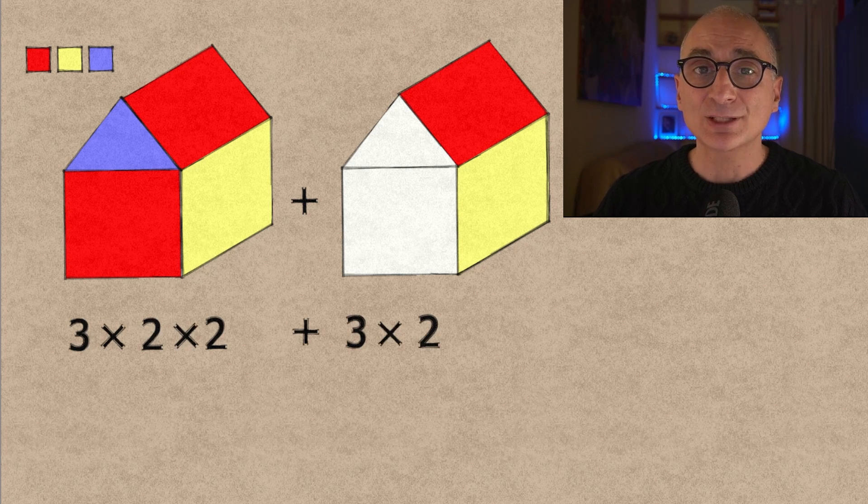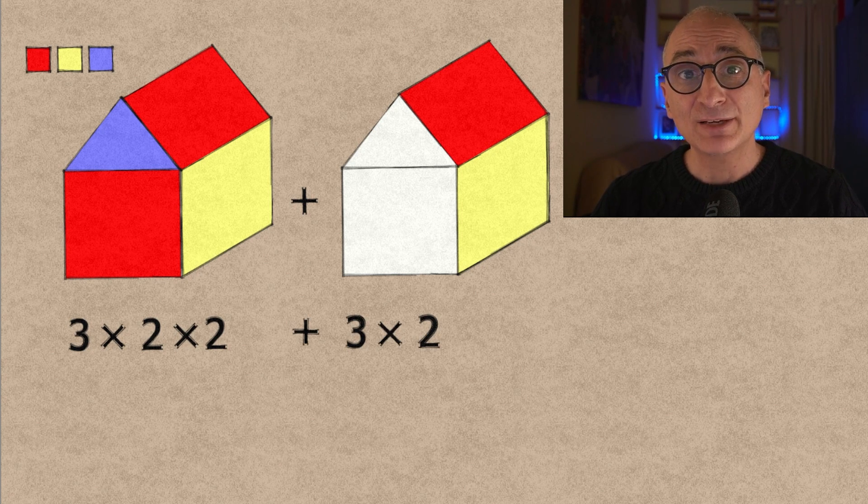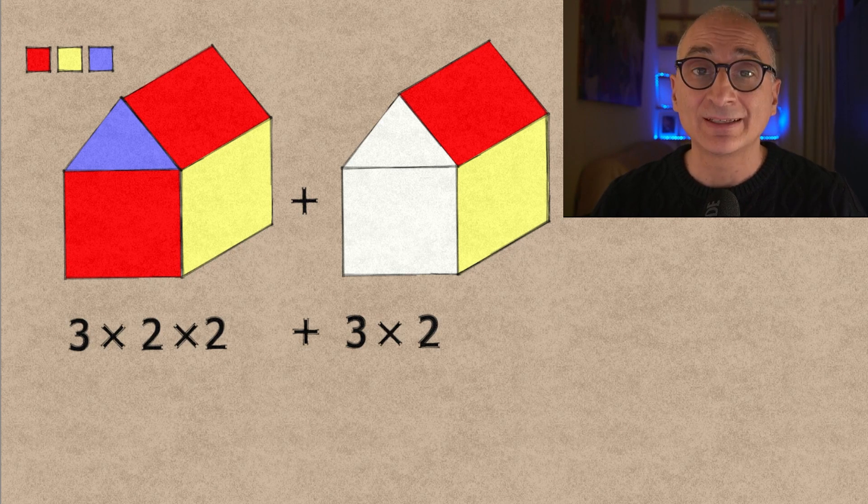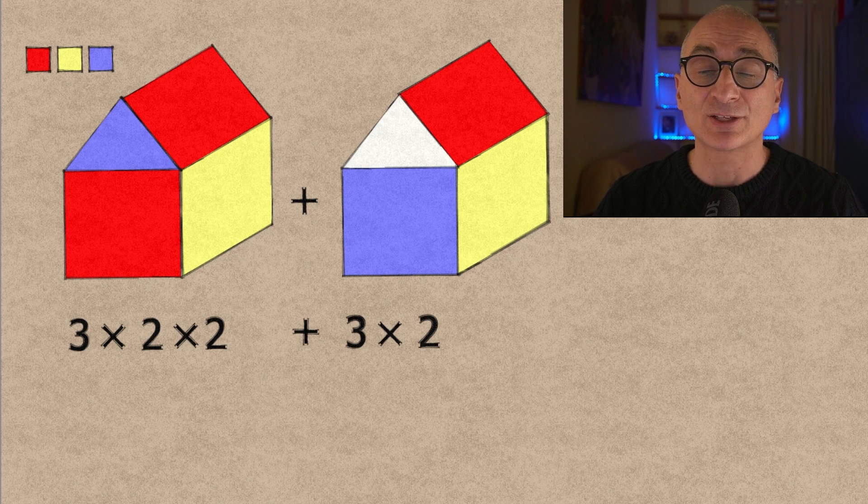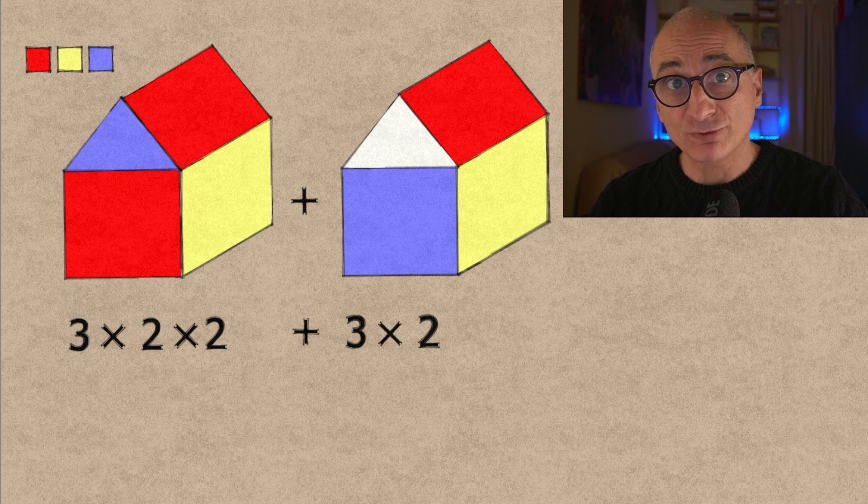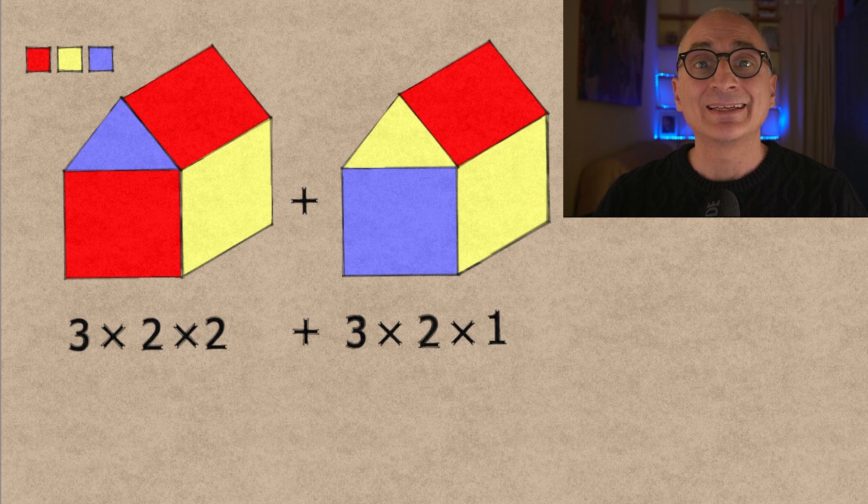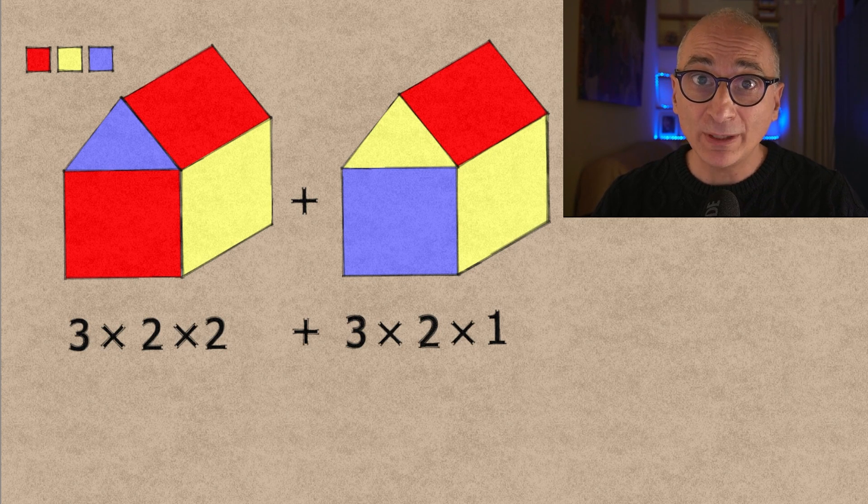In the second situation the front wall is different from the roof and is also different of course from the other wall because they're touching each other. So it must be blue. And the triangle must be different from the roof and from the front wall. So it must be yellow.